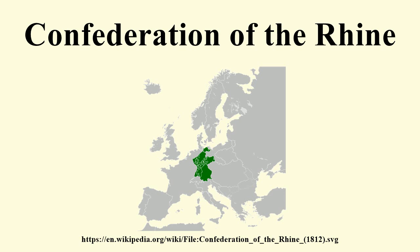Francis and his Habsburg dynasty continued as emperors of Austria. According to the treaty, the Confederation was to be run by common constitutional bodies, but the individual states wanted unlimited sovereignty. Instead of a monarchical head of state, as the Holy Roman Emperor had had, its highest office was held by Karl Theodor von Dalberg, the former Arch-Chancellor, who now bore the title of Prince Primate of the Confederation. He was president of the College of Kings and presided over the Diet of the Confederation, designed to be a Parliament-like body, although it never actually assembled.